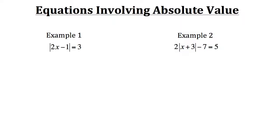In example one we have the absolute value of 2x minus 1 equals 3. With absolute values, it's the distance that a certain point is from the origin. Whether it's a point on the negative side or the positive side, the distance will still be the same. So here this absolute value has a distance of 3 — either 3 in the positive direction or 3 in the negative direction.